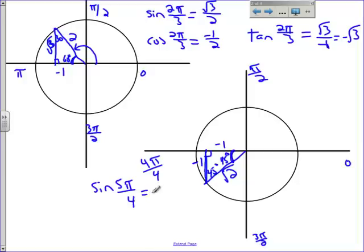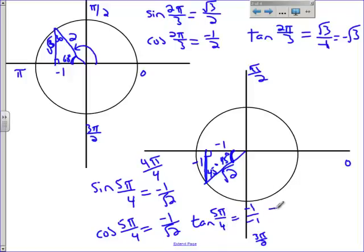So let's find some values here. The sine of 5π over 4, we use this reference angle, is opposite over hypotenuse. And then the cosine of 5π over 4 would be adjacent over hypotenuse. That's the same thing. And then the tangent of 5π over 4 is opposite over adjacent, which is negative 1 over negative 1, which is just 1.